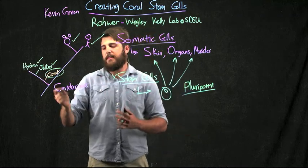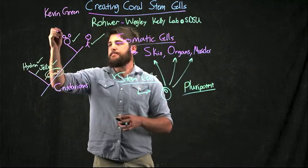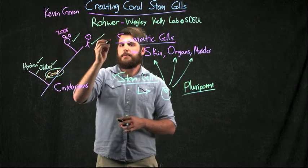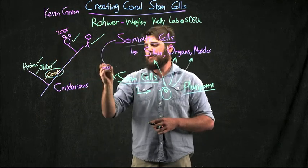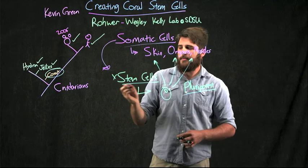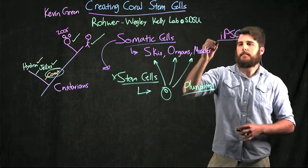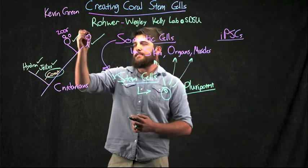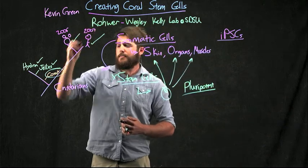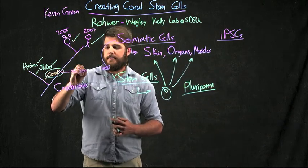So since we can't find them, I hope to create them. In 2006, researchers were able to take somatic cells from mice and induce this pluripotency. We call these iPSCs. They were also able to do this in 2007 in humans, and hopefully I will be able to do it in corals.